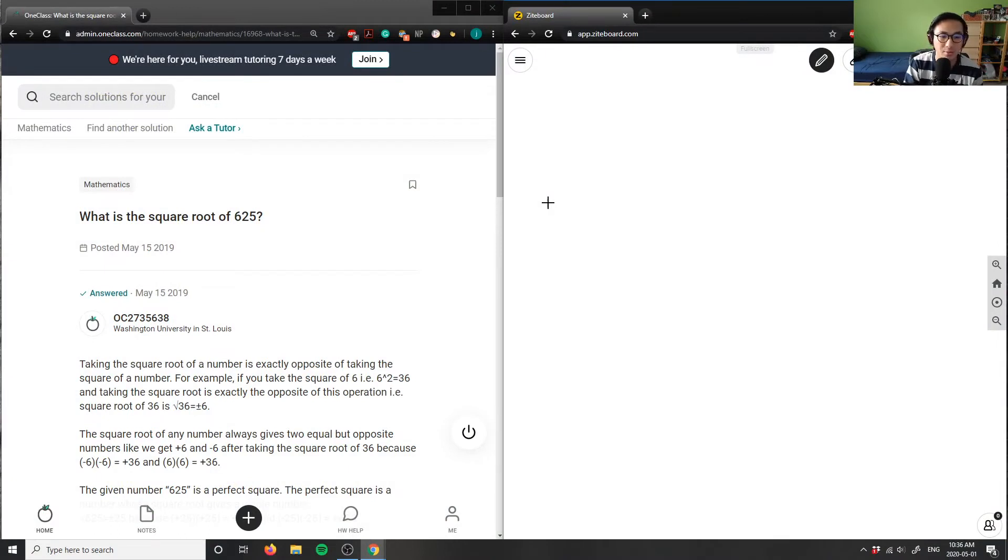What is the square root of 625? So I have the square root of 625. Again, we're going to use prime factorization.